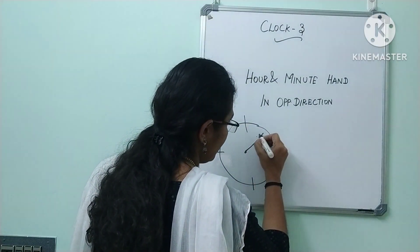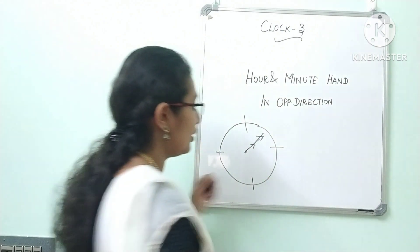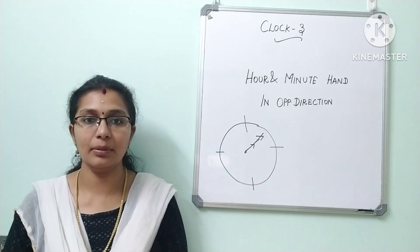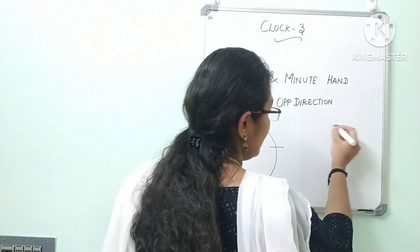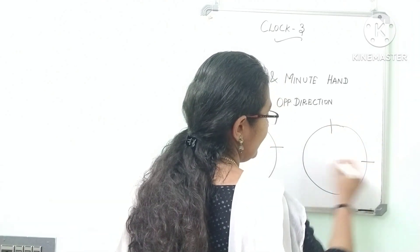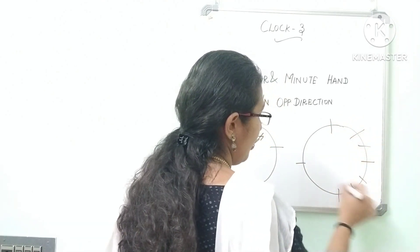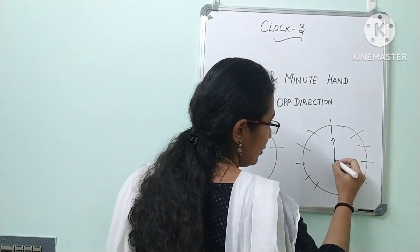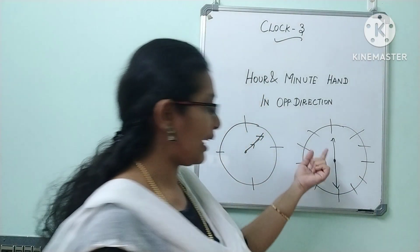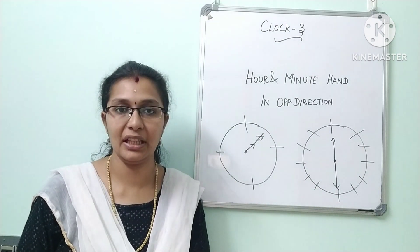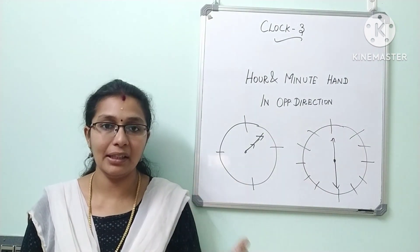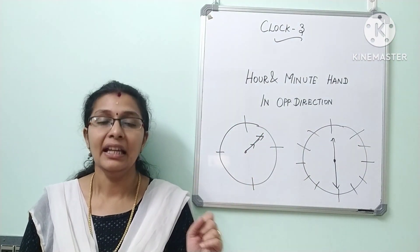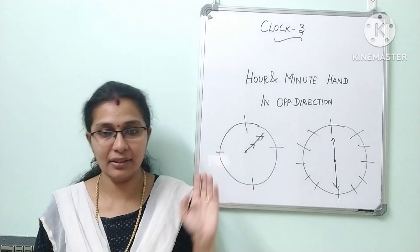For example, in a straight line, the hour hand and minute hand coincide. So this is the concept. If you look at the straight line, you can see the opposite direction. You can see the question in two ways. One is the opposite direction. Find the exact time at which the hour hand and minute hand are in opposite direction.